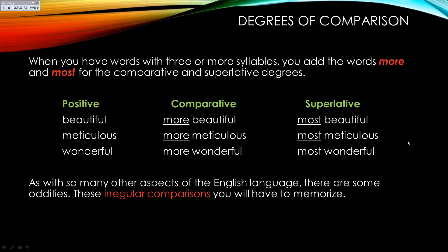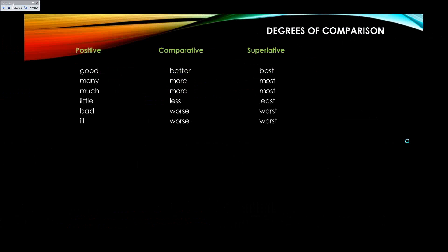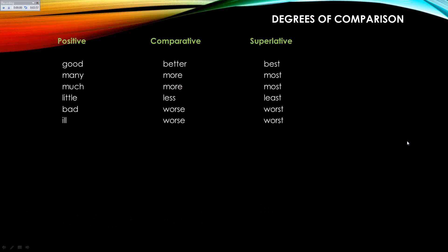As with so many other aspects of the English language, there are some oddities — some irregular comparisons that you simply have to memorize. I suspect you already know these. Good goes good, better, best. Many is many, more, and most. Much, more, and most.